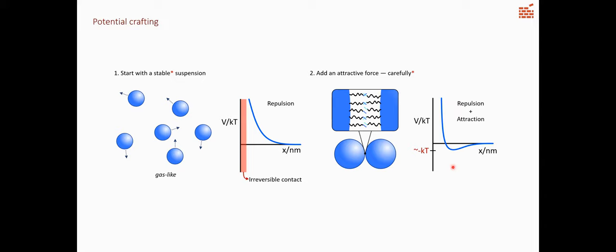If that potential well is too deep, then again, you just have stuck particles. If it's too shallow, then nothing binds, right? So it's a very delicate balance of attraction and repulsion. And which for, if you have spheres like this, you would end up probably with some FCC crystal structure. And so the question is, you know, how do you make colloids assemble? In short, give them an interaction potential like this.